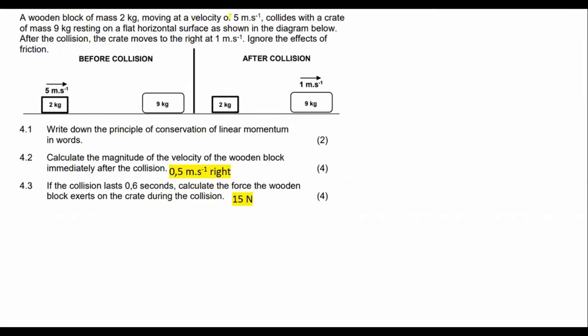So it says a wooden block of mass two kilograms moving at a velocity of five meters per second collides with a crate resting on a flat horizontal surface. After the collision, the crate moves to the right at one meters per second. Ignore friction.